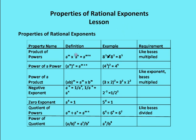Next is power of a power property. I have some value a to the m, and I'm raising that all to the n value. What I'm going to do is multiply the exponents together and keep the base the same. In this example, I give you 4 squared, and I'm taking that to the second power. I multiply both powers together and end up with 4 to the fourth.